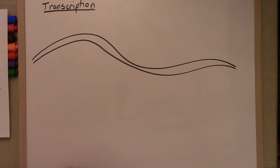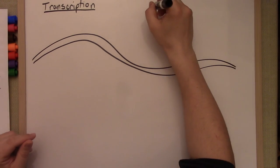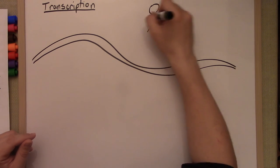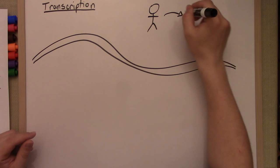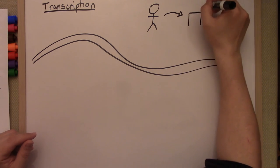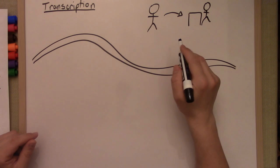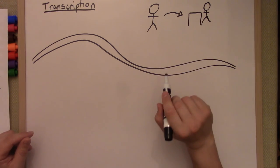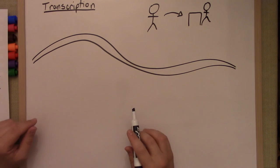Today we're going to take a look at transcription. Transcription is where our friend Jack — if you watched the previous video — is going to go to the library. The librarian says to Jack: you cannot do anything with that book except take it over there, copy out the pieces that you want, and then give me back the book. So that's what's going to happen in transcription.